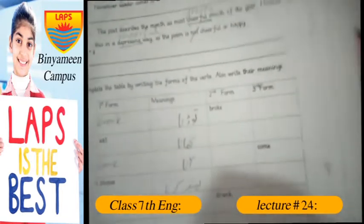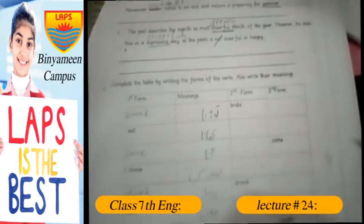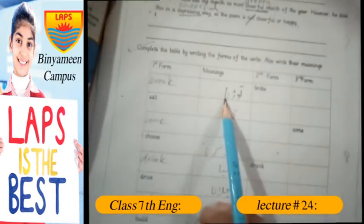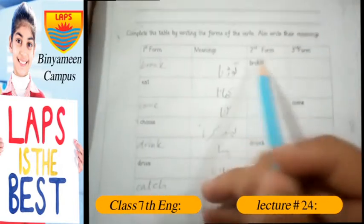Today's activity is from our summer pack page number 6. It says to complete the table by writing the forms of the verbs and also write their meanings. This activity is given in a puzzle where the first form was not written but the second form was written.